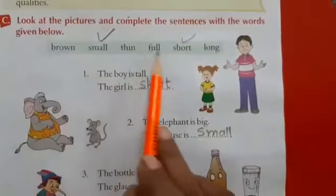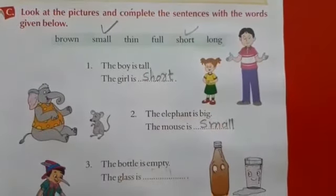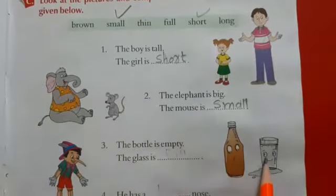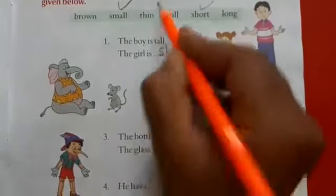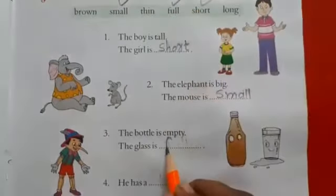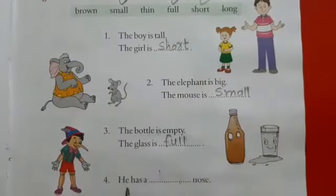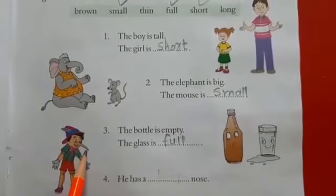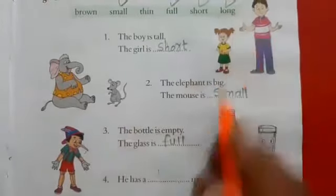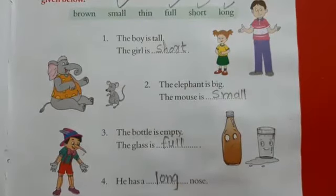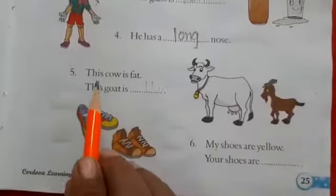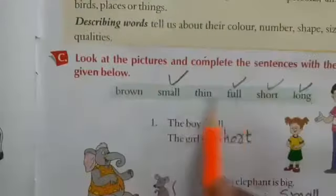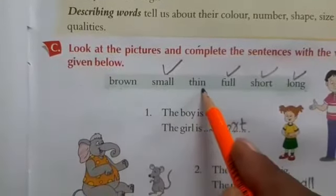Now from the remaining words — brown, thin, full, and long — the bottle is empty but the glass is full, so choose 'full' for that blank. He has a long nose — look at Pinocchio's nose — that is long, so write 'long.' Now the cow is fat but the goat — choose from 'brown' or 'thin' — the goat is thin.